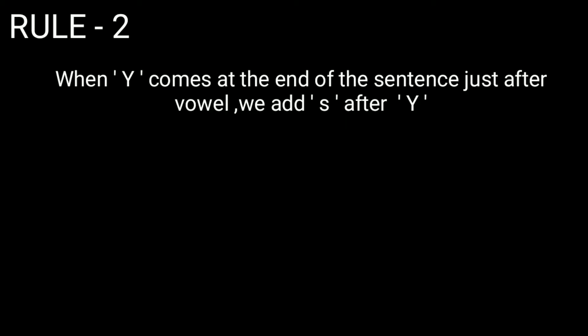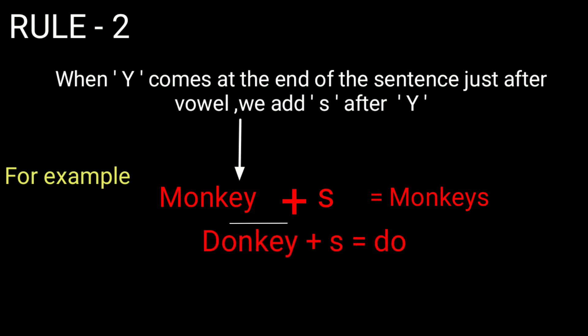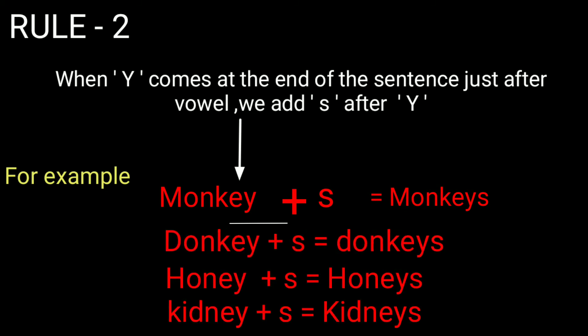Rule two: when you find 'y' at the end of the word but there is a vowel before 'y', just add 's'. For example, monkey has a vowel before 'y', so add 's' to make monkeys. Similarly, donkey becomes donkeys, honey becomes honeys, and kidney becomes kidneys.